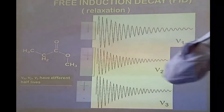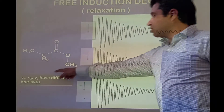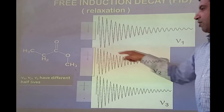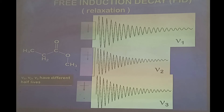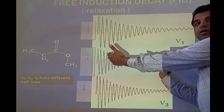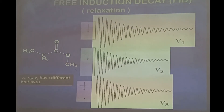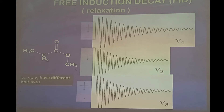Each of these different types of hydrogens will give you a different FID. For frequency μ1 you have this FID, for μ2 you have this FID, and for μ3 you have this FID. The difference between these FIDs is the decaying time — each of these different types of hydrogens takes a different time to go back from the xy-plane towards the z-axis. In other words, they all have a different relaxation time. Nuclei which decay faster will have a shorter FID, and those which take longer to return towards the z-axis will have a slightly longer FID.